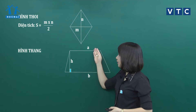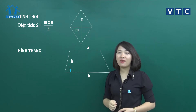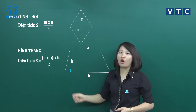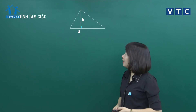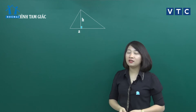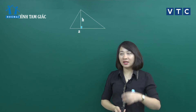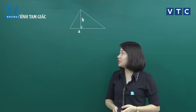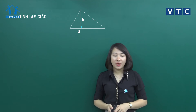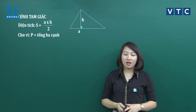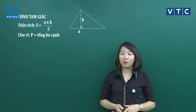Trong hình thang thì đáy lớn là B, đáy nhỏ là A và chiều cao là H. Công thức tính diện tích cho hình thang là lấy đáy lớn cộng đáy nhỏ nhân với chiều cao và chia cho 2. Với hình tam giác thì chúng mình có chiều cao là H và cạnh đáy tương ứng là A. Diện tích bằng A nhân H chia cho 2, và chu vi bằng tổng của 3 cạnh.